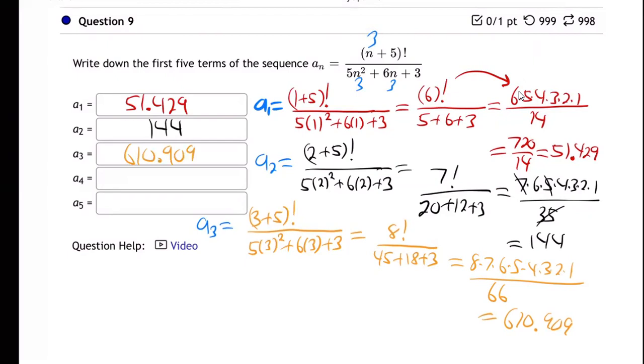So this is just tedious - you just got to go through each of these. a sub 4 - now we're going to plug in 4 everywhere. It's getting bigger and harder as we go here. So we're going to get 4 plus 5 factorial all over 5 times 4 squared, 6 times 4 plus 3...